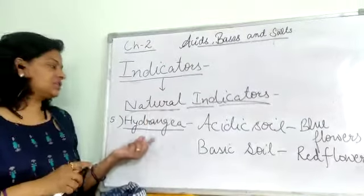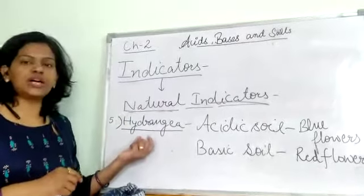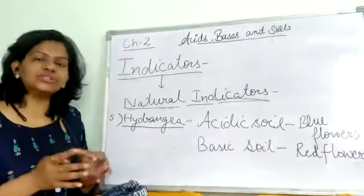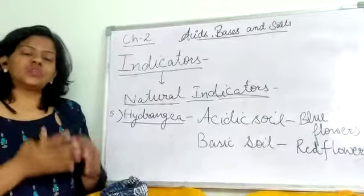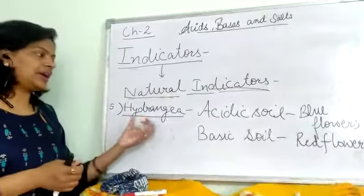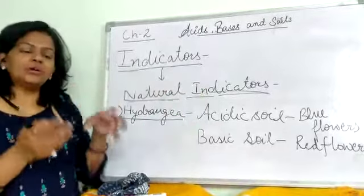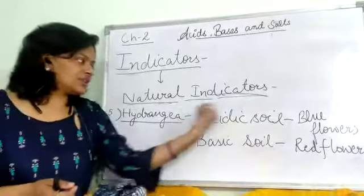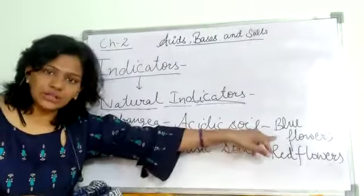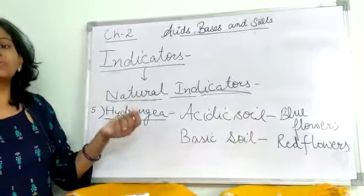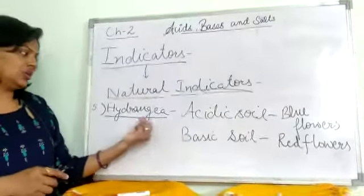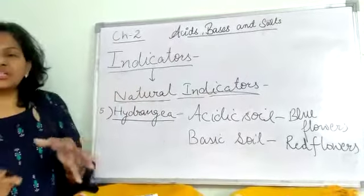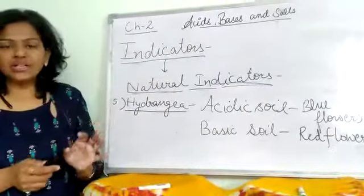The last natural indicator is hydrangea. Hydrangea is a plant used to check the acidity and basicity of soil. If the soil is acidic in nature, the hydrangea plant produces blue-colored flowers. If the soil is basic, the plant produces red-colored flowers. So we have now studied 5 natural indicators.